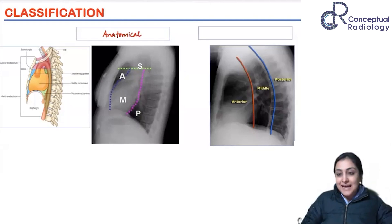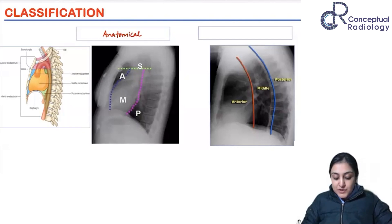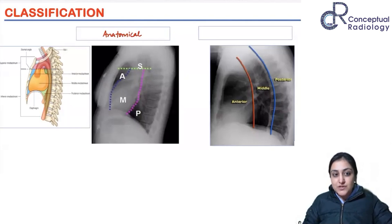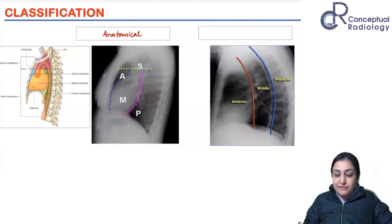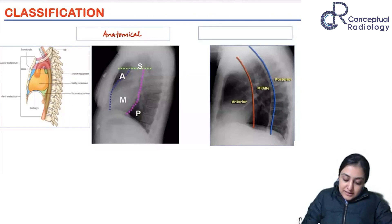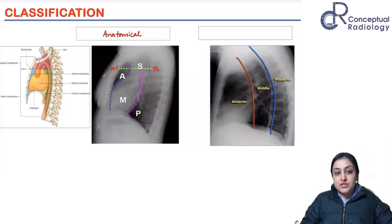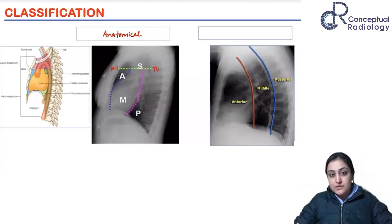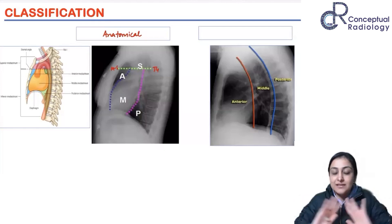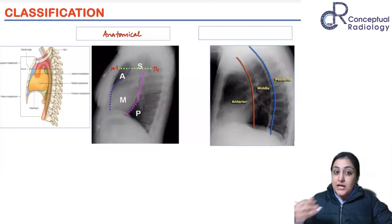The anatomical classification was sometimes also described into four compartments, including a superior mediastinum. The superior mediastinum was defined from the inferior border of T4 vertebra to the manubriosternal junction. However, nobody uses this four-compartment system anymore, so we now restrict ourselves to only three compartments.